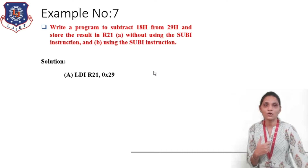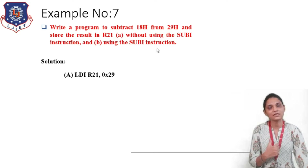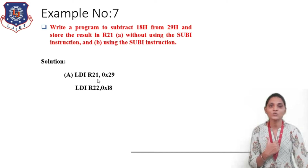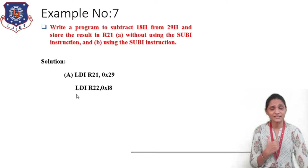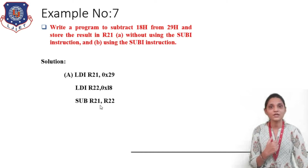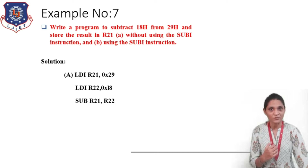First let us see the method without SUBI. First we load the numbers inside registers and then use the SUB instruction. The first instruction is LDI R21, 0x29 — this will store 29 inside register R21. Then LDI R22, 0x18 — this will store 18 inside register R22. Now we use the subtraction instruction SUB R21, R22 — this will subtract the content of R22 from R21 and the result is stored inside R21. This is the basic subtraction operation with the result in R21.